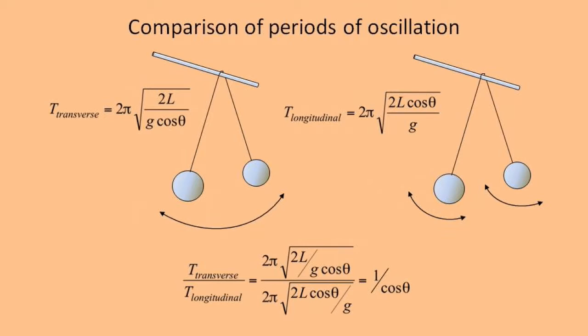We can find the ratio between the two periods to be 1/cos θ. So if θ equals 45 degrees, we see that the two periods in the two directions differ by a factor of √2, with the transverse oscillation slower than the longitudinal oscillation.